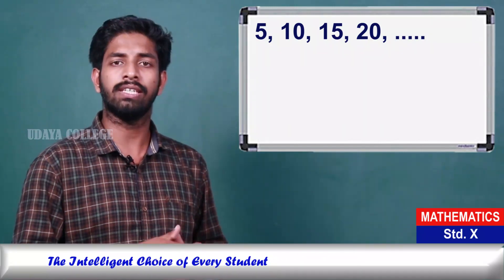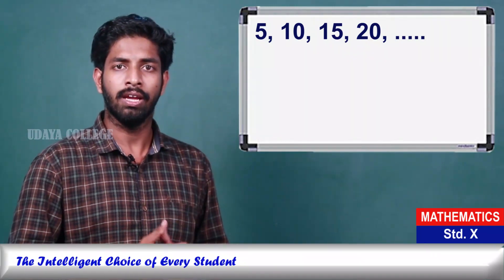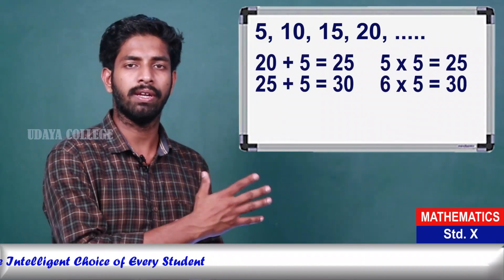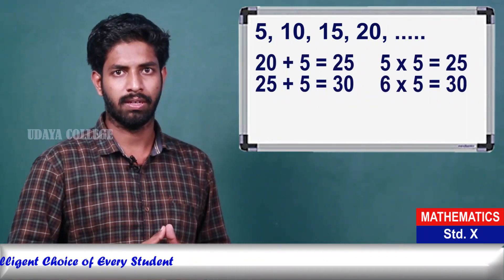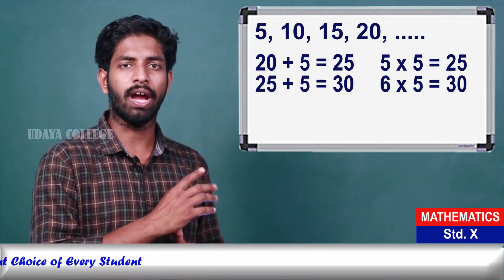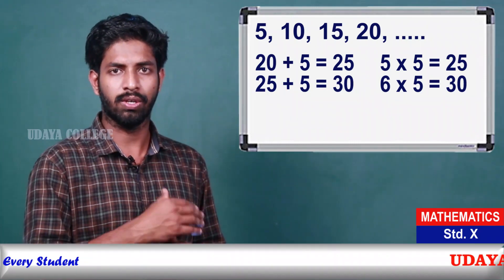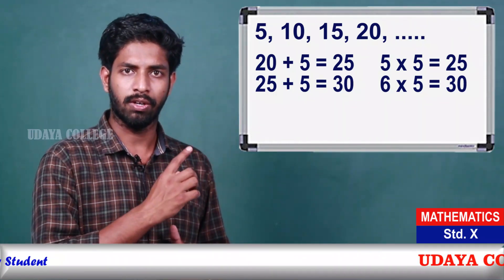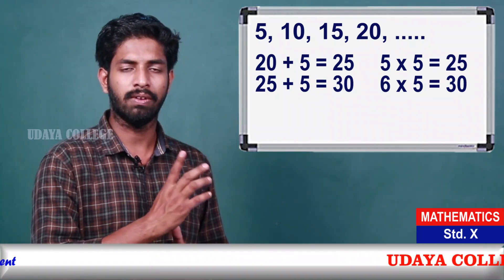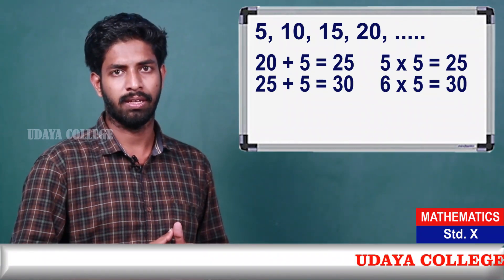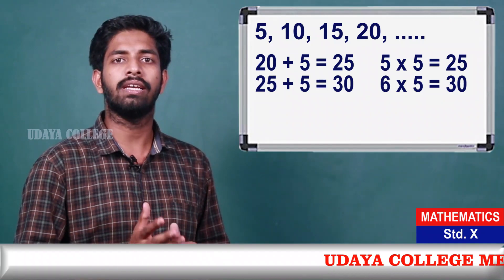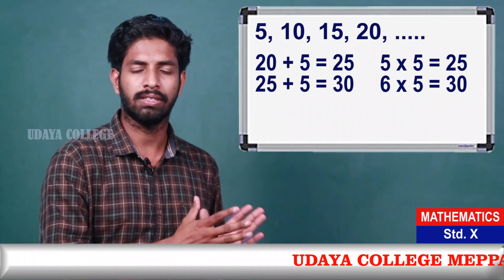So the next number is 20 plus 5, which is 25. That means 5 times 5 equals 25. So the next number is 25 plus 5, which is 30. That means 6 times 5 equals 30.